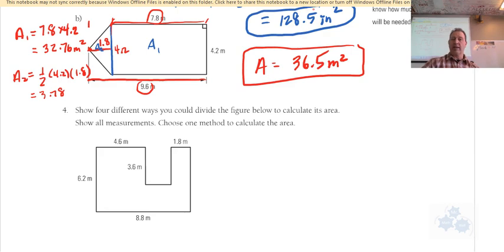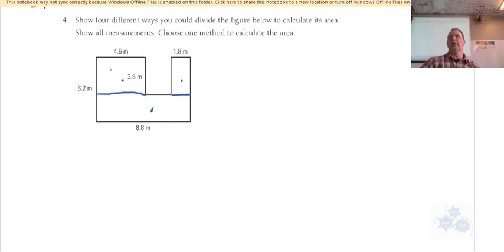Now, number four. Let's discover number four real quick. It doesn't actually ask you to solve for the area for this, does it? It says, show four different ways you could divide the figure below to calculate its area. So you could do this. Area 1, area 2, area 3. You could do this. Area 1 over here, area 2 here, and area 3. So that's looking pretty good. Everybody understanding this so far? We could probably do this, couldn't we? Area 1, 2, and 3. And we could probably do this. Area 1, 2, and 3. There's lots of different ways you could do this, and they're just asking you to explore those different ways.